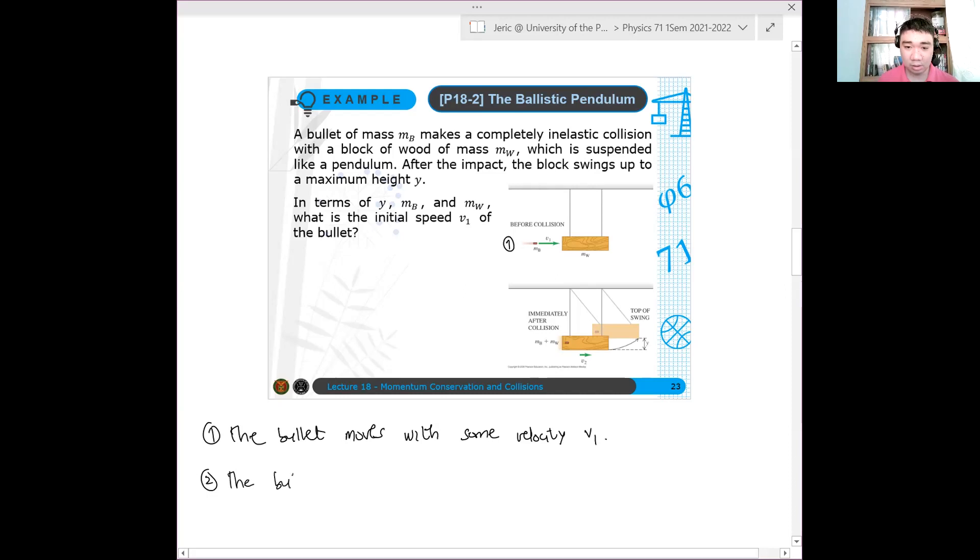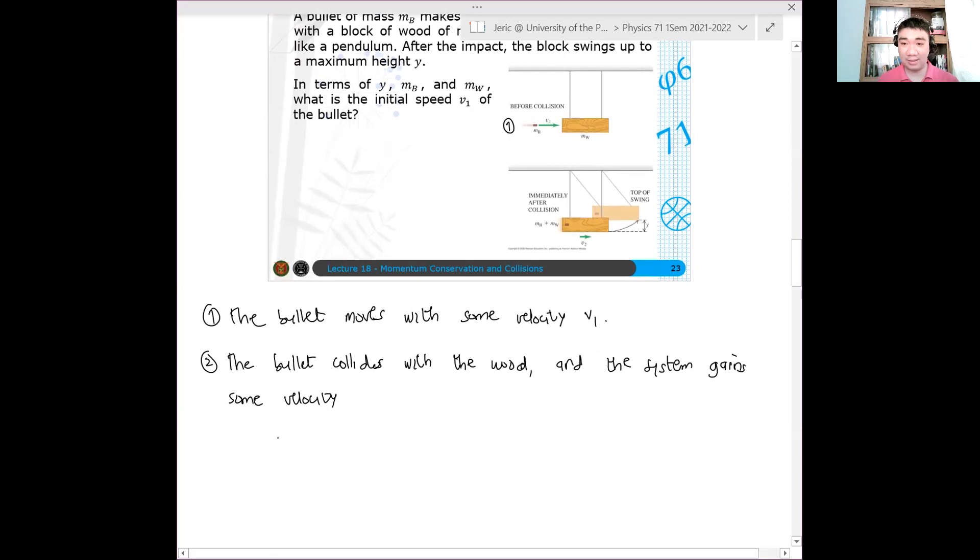So the bullet collides with the wood and the system gains some velocity. Okay, then after that, the bullet-wood system is lifted. So this is the second state.